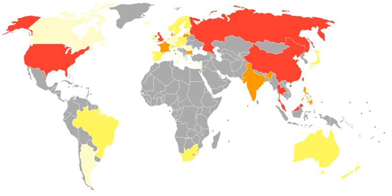False light is a legal term that refers to a tort concerning privacy that is similar to the tort of defamation. For example, the privacy laws in the United States include a non-public person's right to privacy from publicity which puts them in a false light to the public. A non-public person's right to privacy from publicity is balanced against the First Amendment right of free speech. False light laws are intended primarily to protect the plaintiff's mental or emotional well-being. If a publication of information is false, then a tort of defamation might have occurred. If that communication is not technically false but is still misleading, then a tort of false light might have occurred. The specific elements of the tort of false light vary considerably even among those jurisdictions which do recognize this tort.